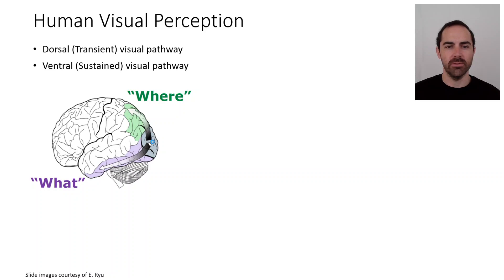These are called pathways. One of them is the what pathway, also called the sustained pathway, which comprises the parvo cells and is processing the details in the scene. It's processing the information from the photoreceptors in the fovea and it's slow.